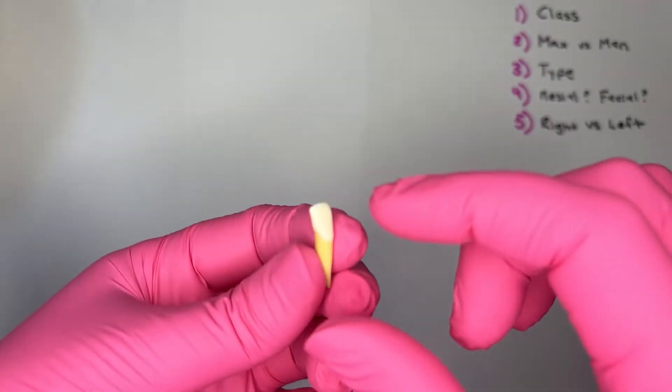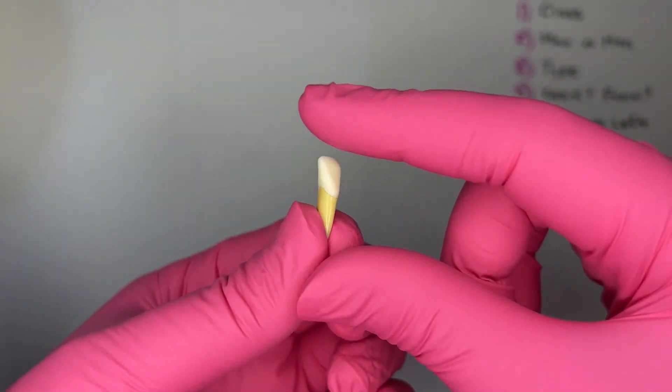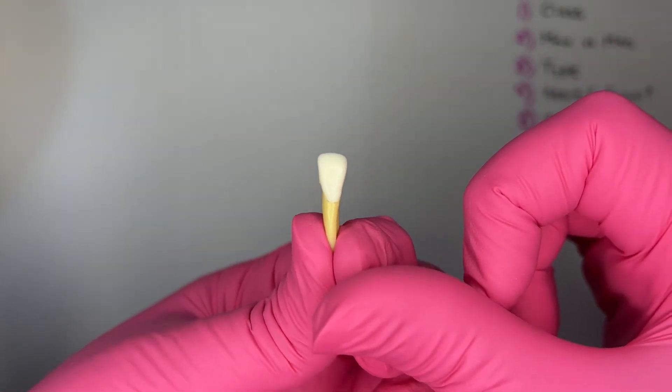Step one, what class of tooth is this? Looking at the biting edge, I see that it's flat, it has an incisal ridge, no cusp, it's an incisor.